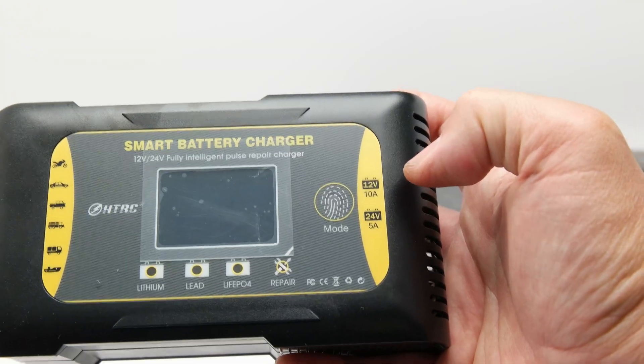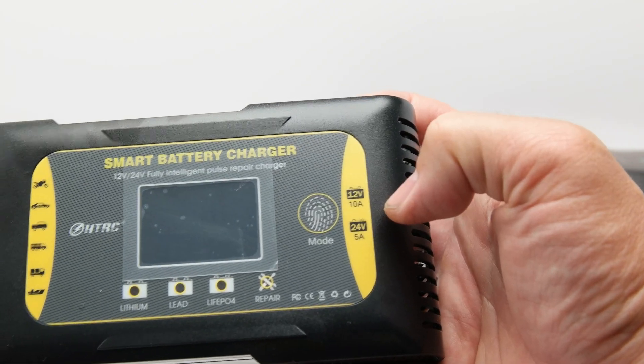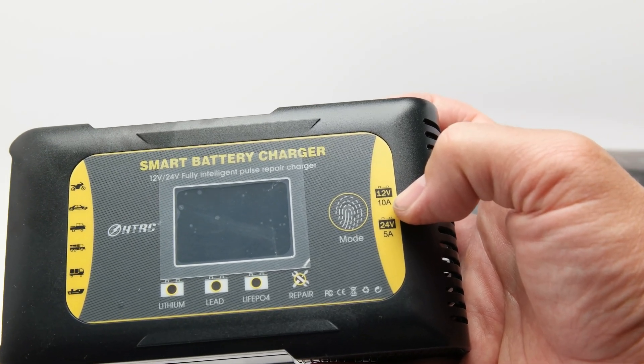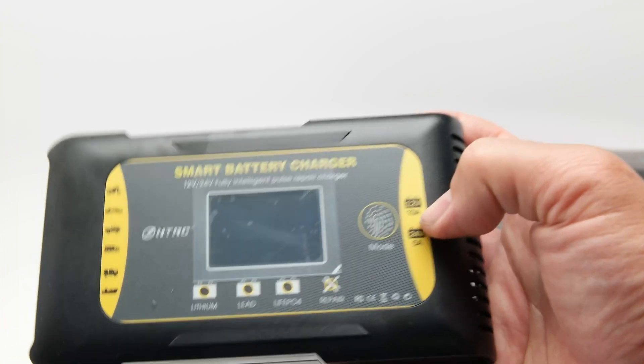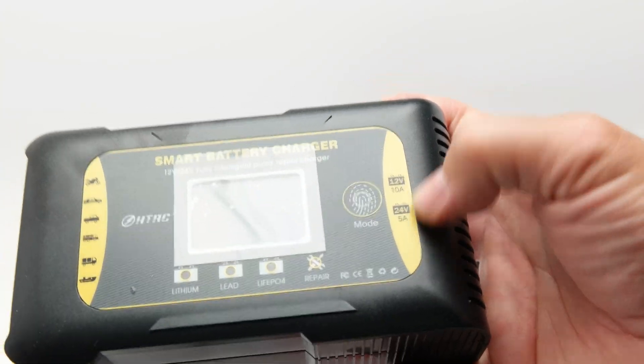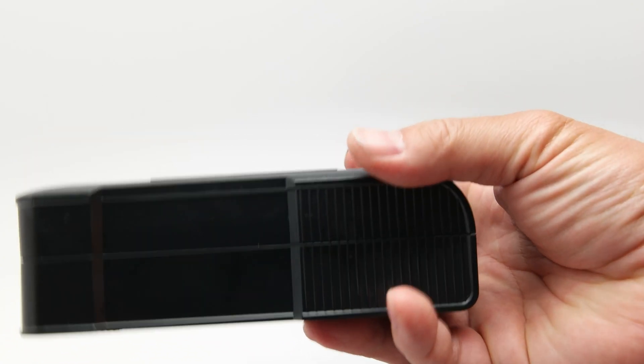One good thing about this is besides the fact that it charges all these batteries is it charges at a relatively decent rate. So we're looking at 12 volts, 10 amps, which is actually really high rate compared to the size of this and 24 volts at 5 amps, obviously, because it's the same output rating. And that's the maximum that I'll charge it at. Obviously, this is a smart charger.